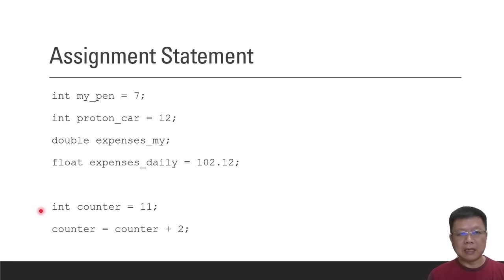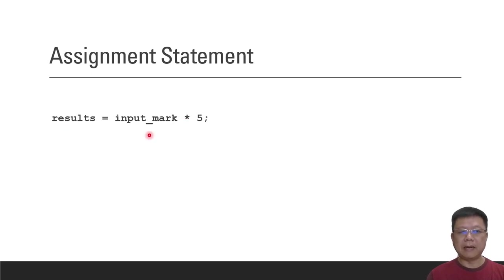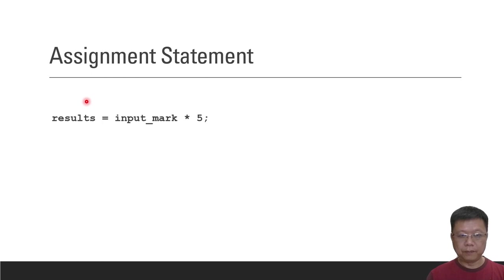Those are the assignment statements and how they work. Another example: results = input_mark * 5. So 5 is multiplied by input_marks and then this value is assigned to results.